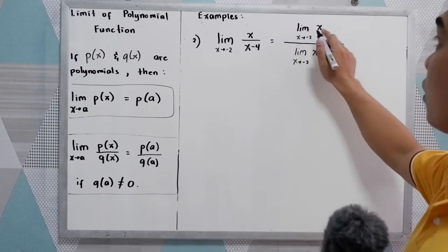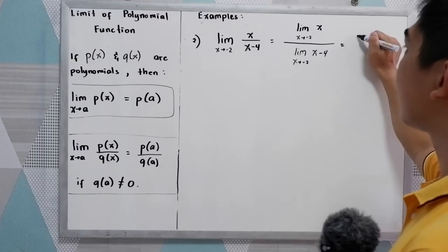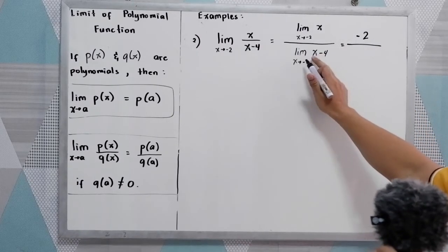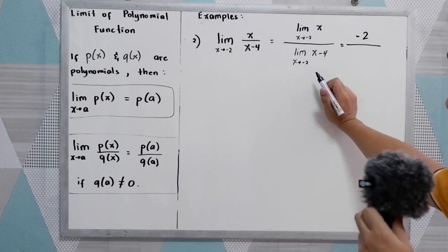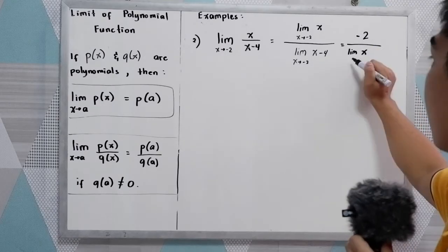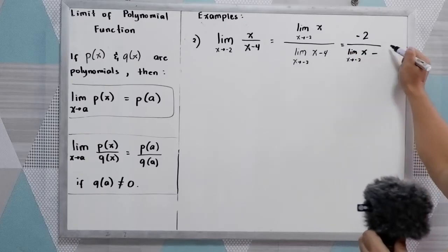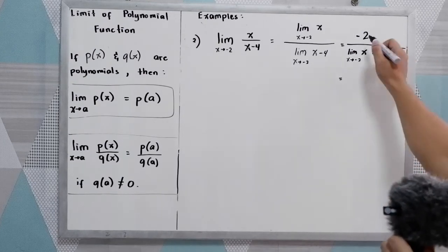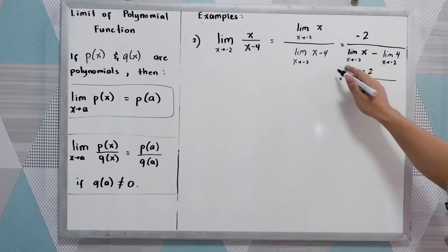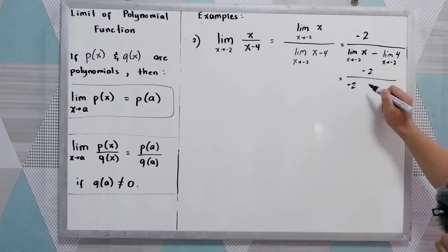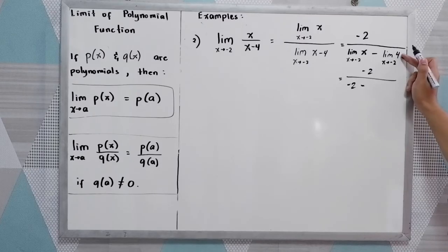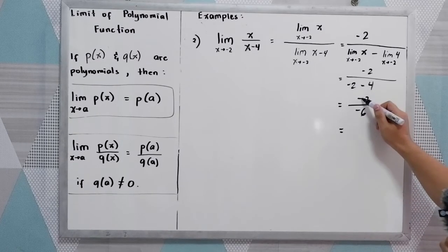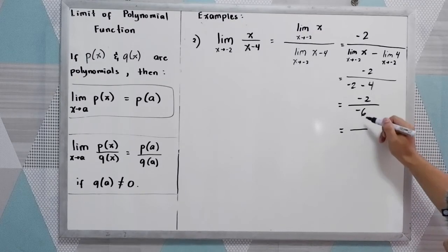The limit of X as X approaches negative 2 is negative 2. For the denominator, applying the sum or difference rule: the limit of X as X approaches negative 2 is negative 2, minus the constant 4 by theorem 1, giving us negative 6. So we have negative 2 over negative 6. Negative divided by negative is positive, and 2 over 6 simplifies to 1 third.